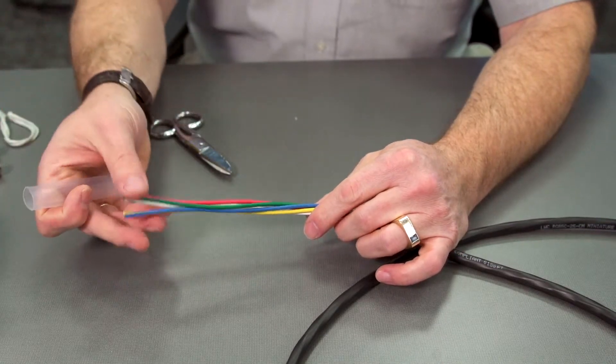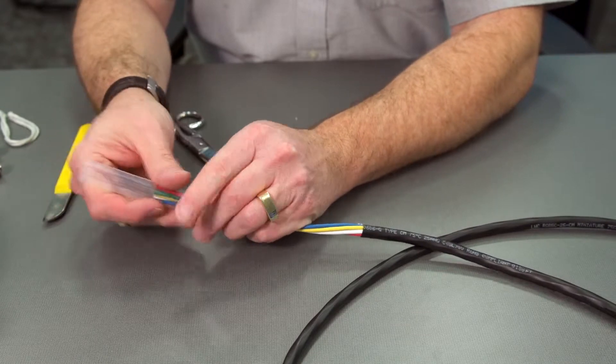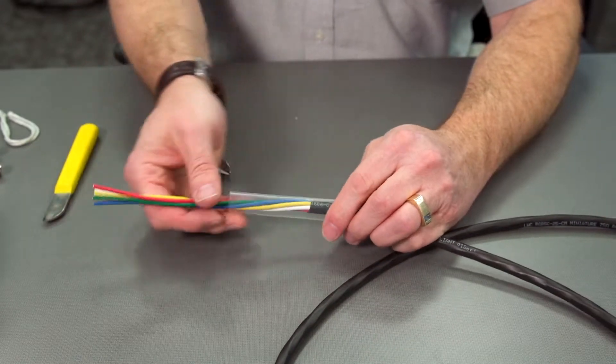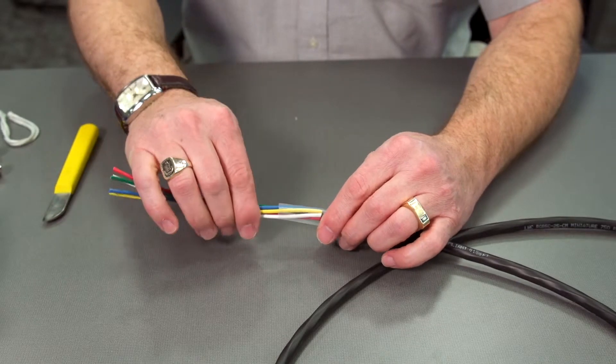Next step is to put on some heat shrink. So when we're all done, we'll have a nice clean end. Normally this heat shrink would be maybe black, but for this we'll use a clear so we can see what we're doing.